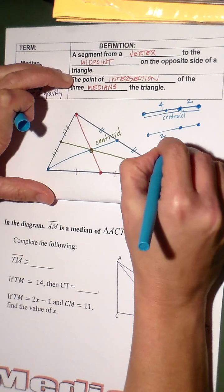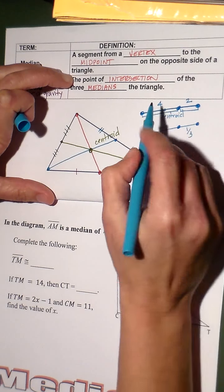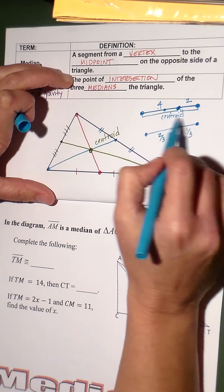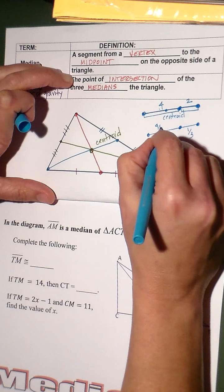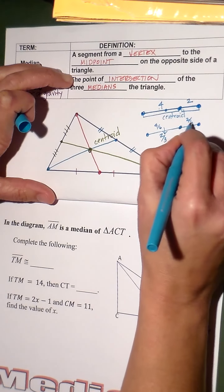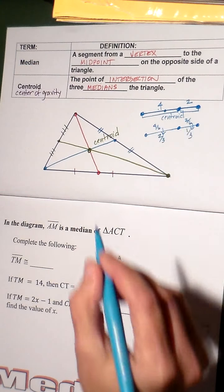Or, you could say this one is two-thirds of the length, and this one is one-third of the length, because four is two-thirds of six, right? Four of six is two-thirds. Two of six is one-third. So, that's how we do the centroid.